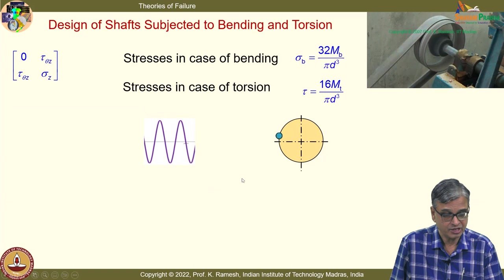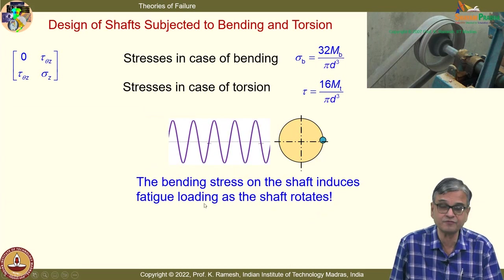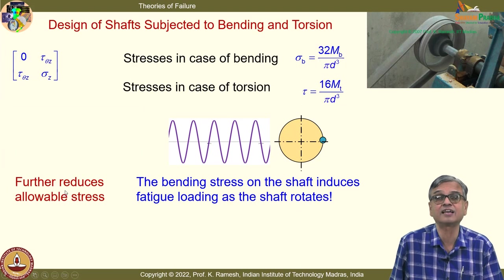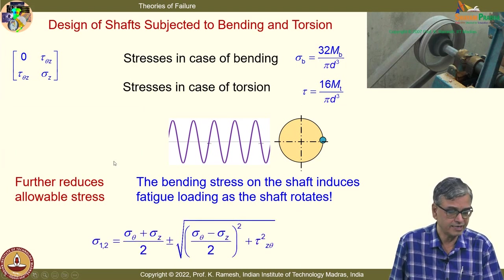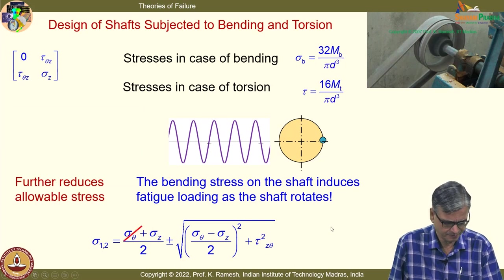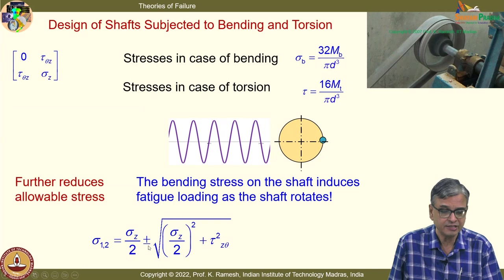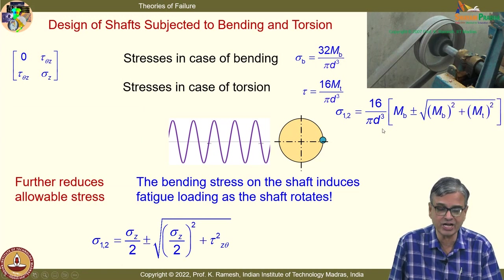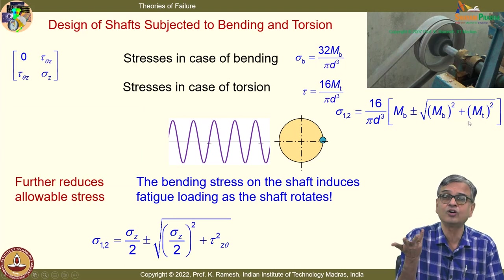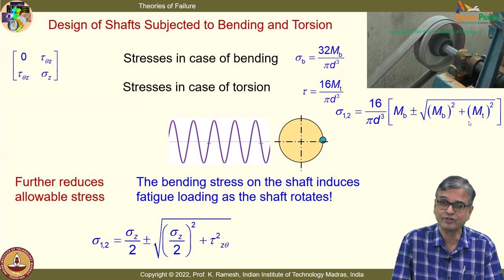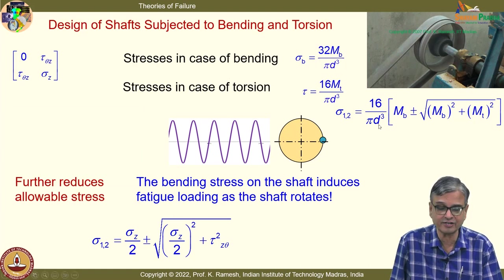All your design courses basically use the principal stresses from the stress tensor and express them in terms of bending moment and twisting moment. When you have a shaft transmitting torsion and bending, there is a simple expression to estimate the shaft diameter — torsional stress and bending stress are hidden inside. You do not have to memorize this in your later course; you can derive it.